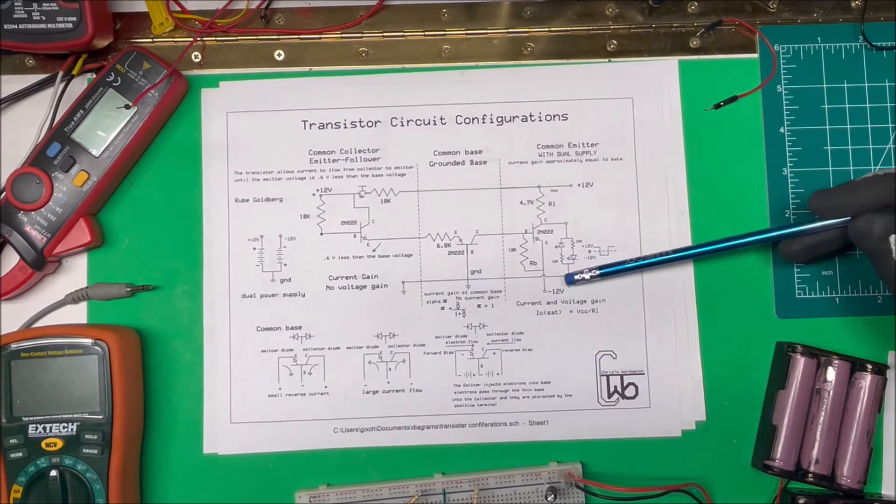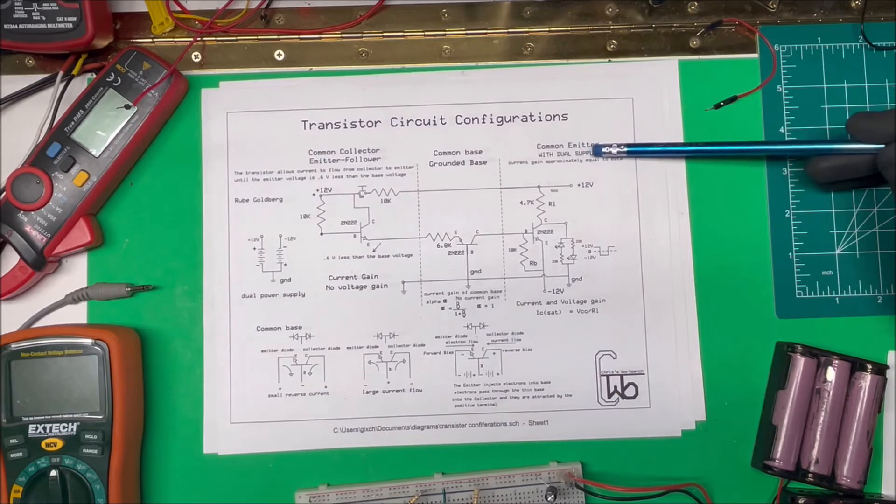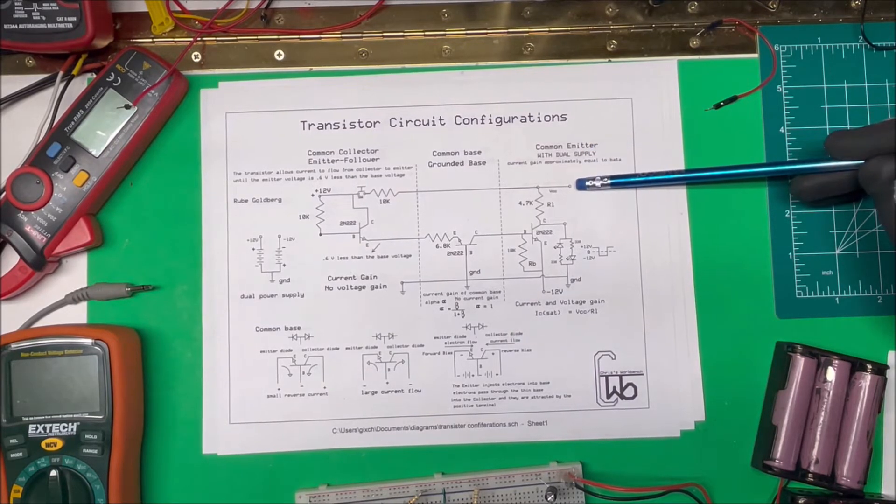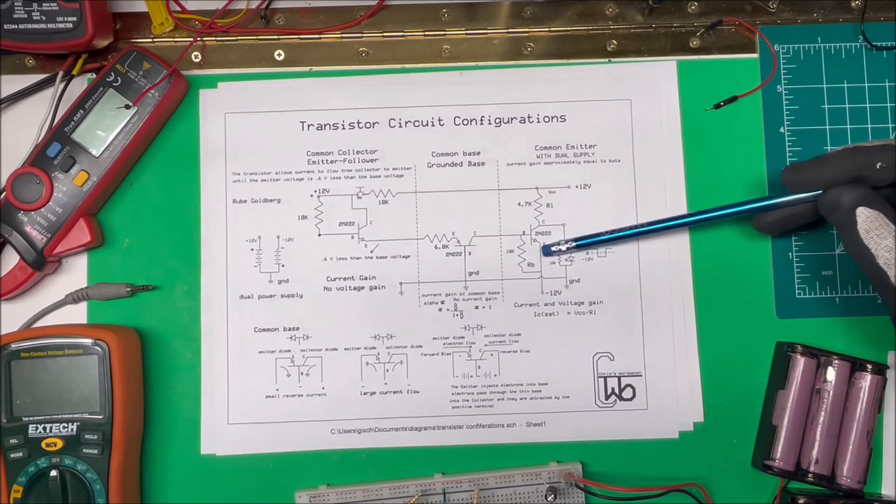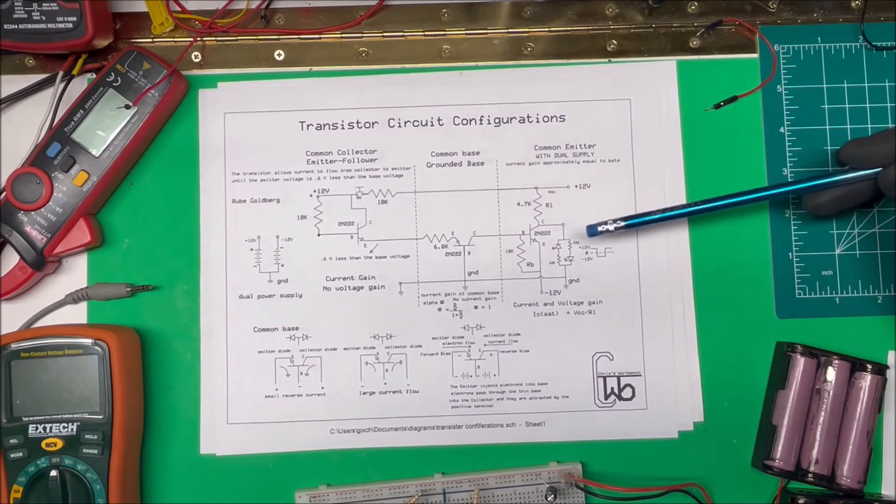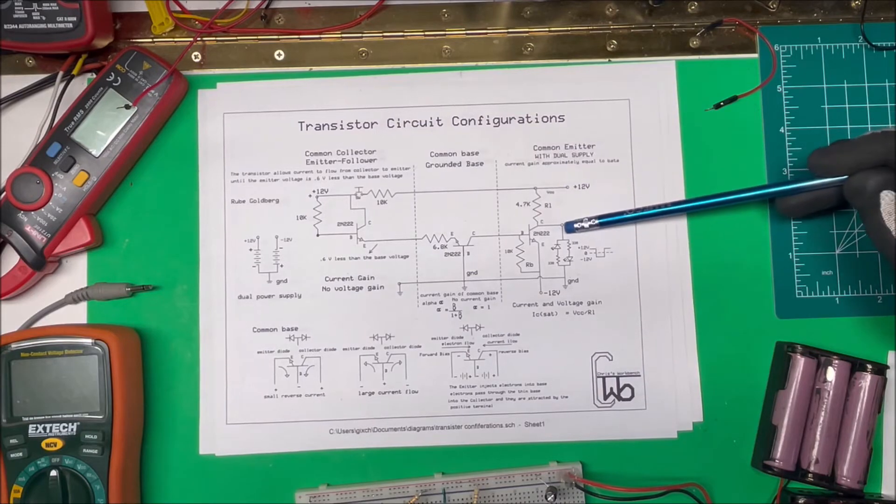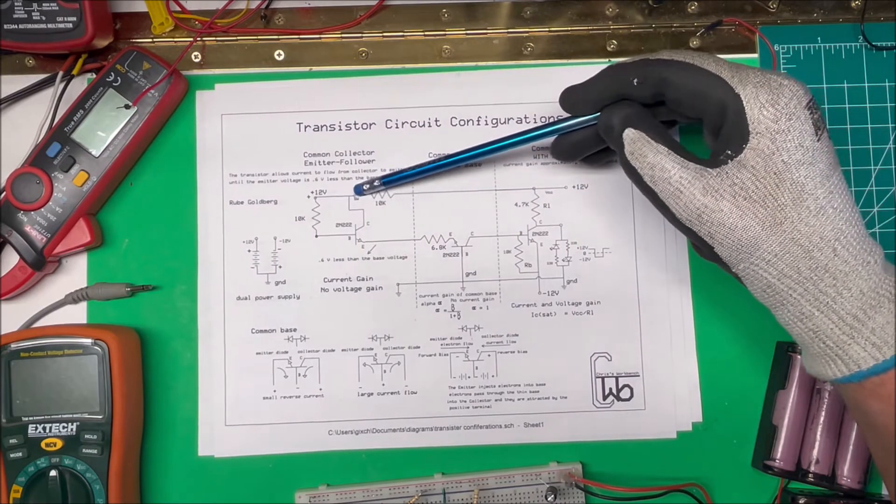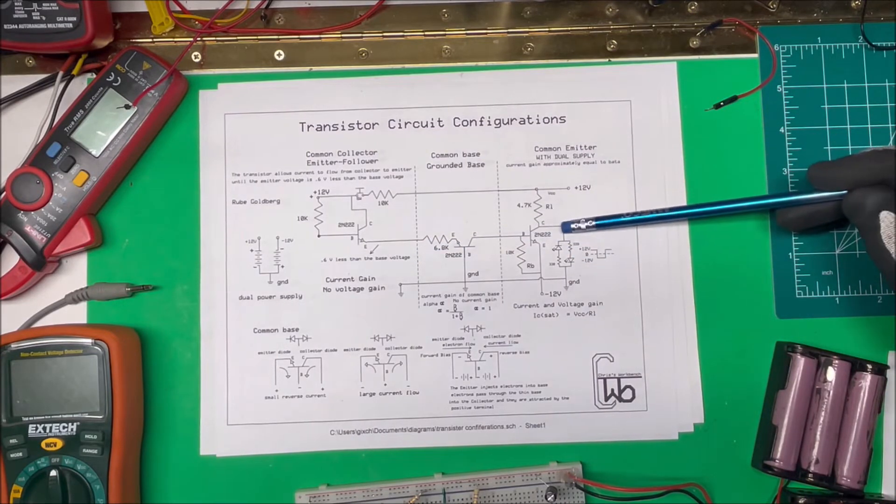Now in order to be able to use this dual power supply, I used a common emitter with a dual voltage supply on it. So I have my positive up here coming into the collector, and then I have the negative down here tied to the emitter. Out here I'm going to have, when I turn it on, I'm going to get plus 12 volts.